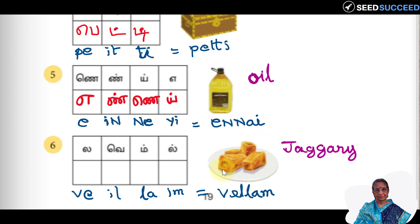The sixth word is vellam, that is jaggery. Jaggery, in Tamil vellam. Vel lam, ve il vel, la im lam vel. So first letter is ve, this is ve. Il, il, la, im. Vellam. Clear. Vellam means jaggery. Ve il la im vellam, jaggery.